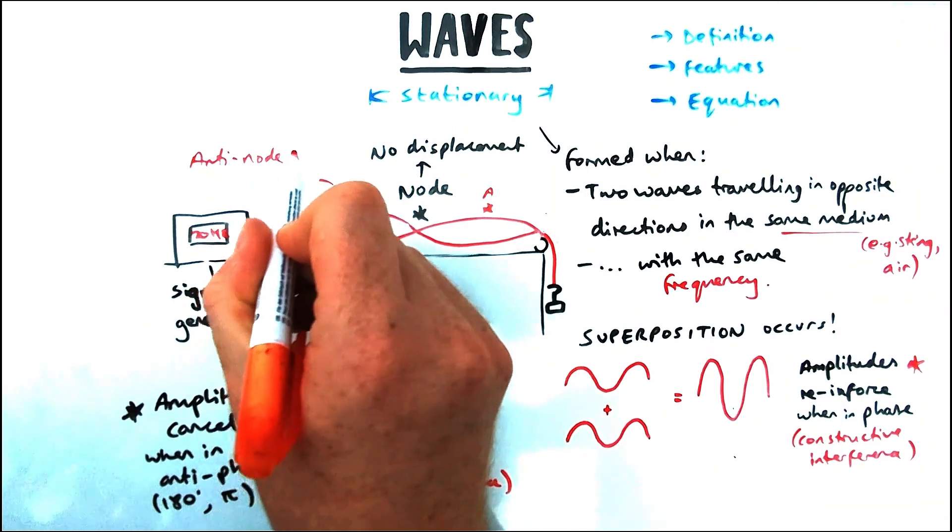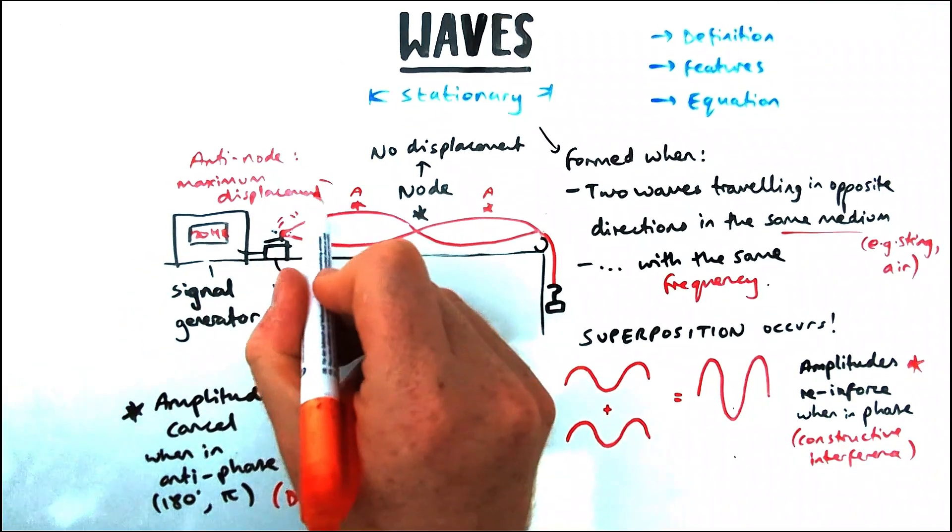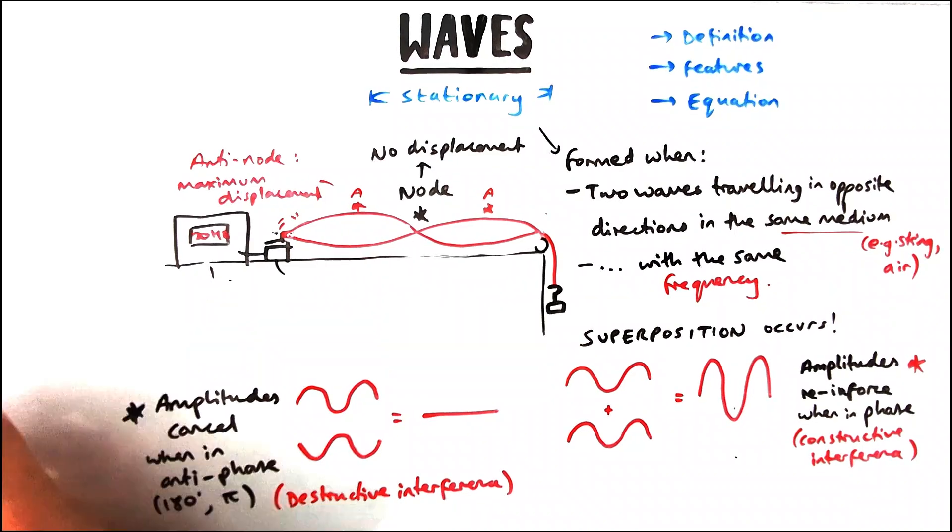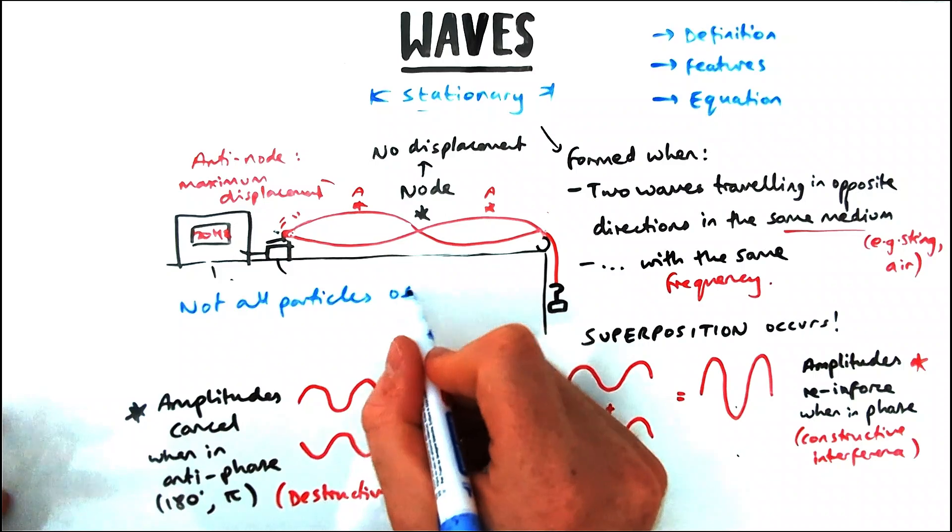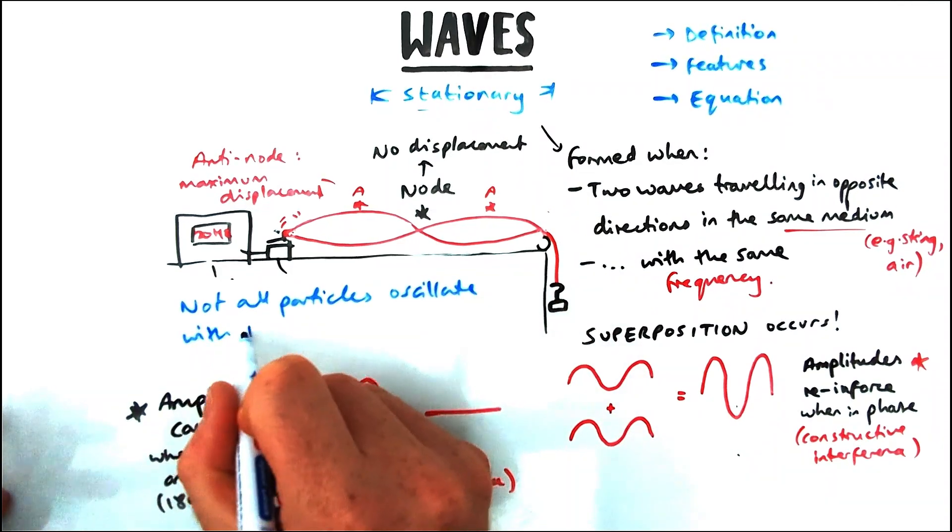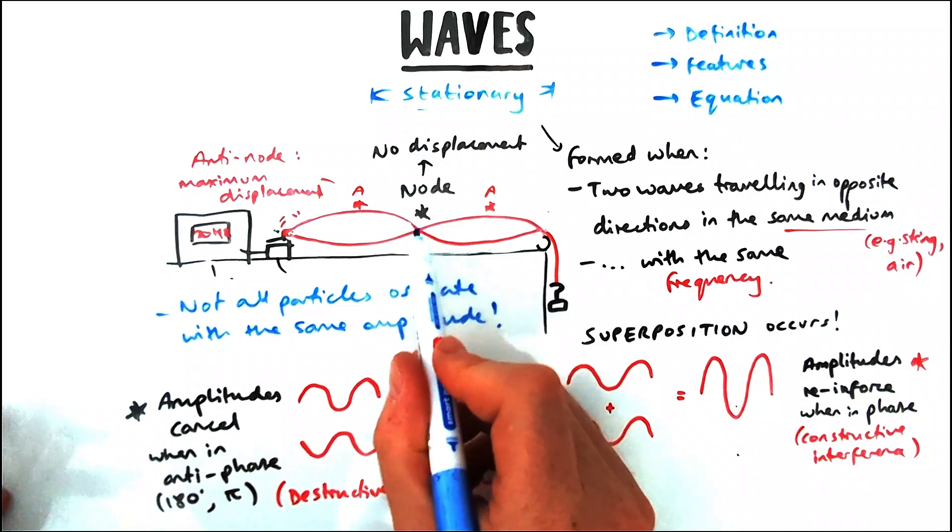The points where there's no displacement is called a node. A good way of remembering it: node, no displacement. And the parts where it's maximum displacement is the antinode, so kind of like the opposite. That's maximum displacement: antinodes. And there are two in this image where the wave travels at its maximum amplitude.